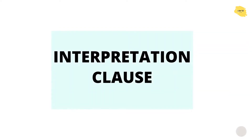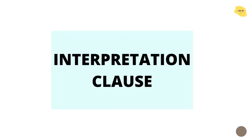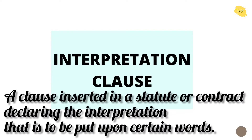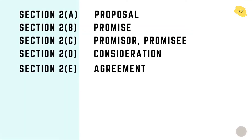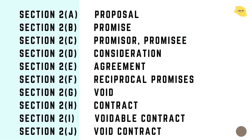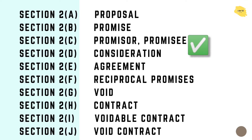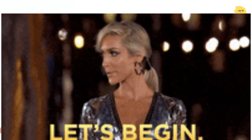Today we will study the interpretation clause. Why are we reading this? Because any repeated term used in an act can be found in the interpretation clause. Today we will study Section 2(a) to 2(j), in which we will study proposal, promise, promisor, promisee, consideration, agreement, reciprocal promises, void contract, voidable contract, and void contract.